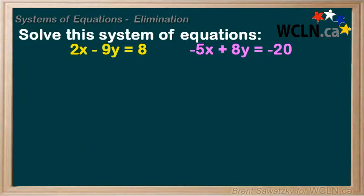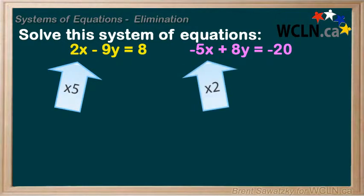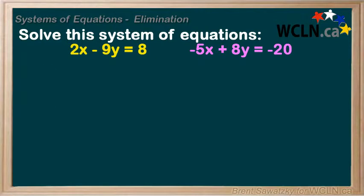As our last example, let's solve this system of equations: 2x minus 9y equals 8, and negative 5x plus 8y equals negative 20. This one would be messy no matter which method we used — substitution would be very messy. But we can use elimination if we're strategic. We could multiply the first equation by 5 and the second by 2, so they'd both have a 10x. We could also try to cancel the y's, but that gets us into really big numbers, so cancelling the x's by making them both 10x is the easier strategy.